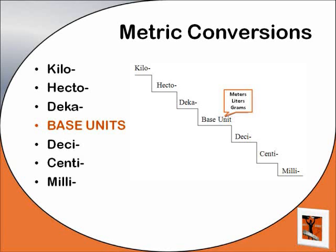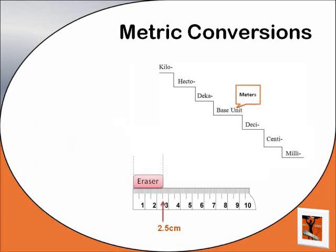Are you ready? In Part 2 of the Measurement Series, we learned that the eraser was 2.5 centimeters. Let's say that I want to convert 2.5 centimeters to meters. On the ladder, I would start at centi. How many places do I need to move up the ladder? Okay, so let's move the decimal that number of places to the left. What is your final answer?